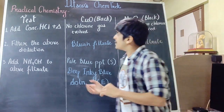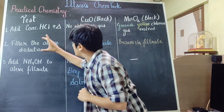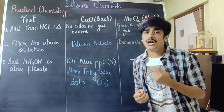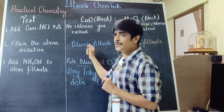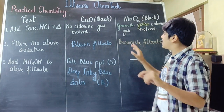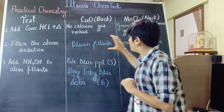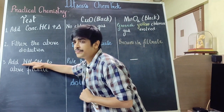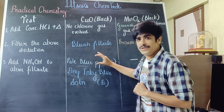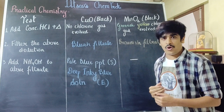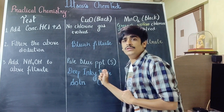Once done, you can filter the entire solution obtained in the first reaction and notice the colour. In the first case of copper oxide, the colour of the filtrate is going to be bluish, and in the second case of manganese dioxide, the colour of the solution is going to be brownish. The last thing we are going to do is add a small amount of ammonium hydroxide to both solutions obtained. For copper oxide, we will first get a pale blue precipitate when ammonium hydroxide is added in a small amount, and when added in excess, it will dissolve giving a deep inky blue solution.